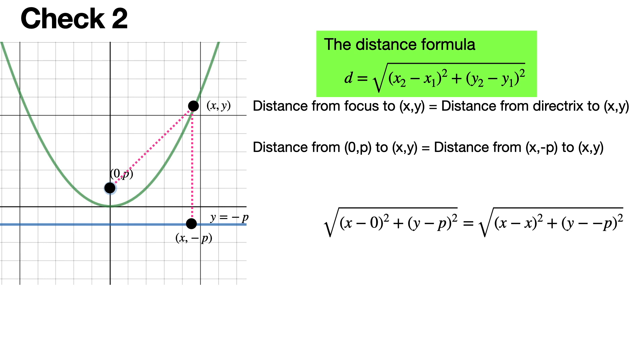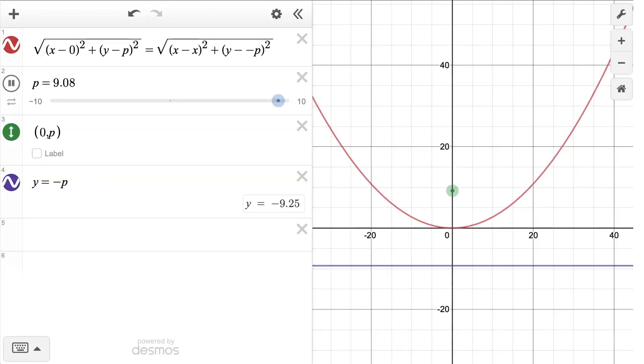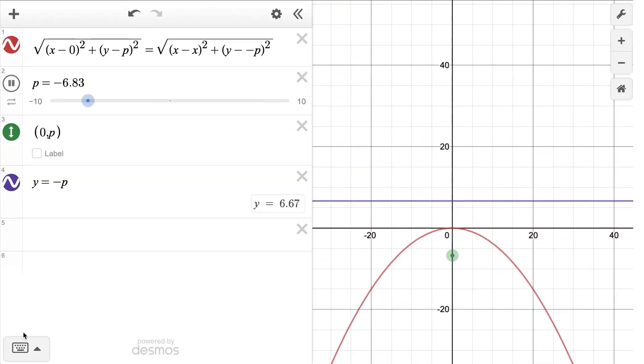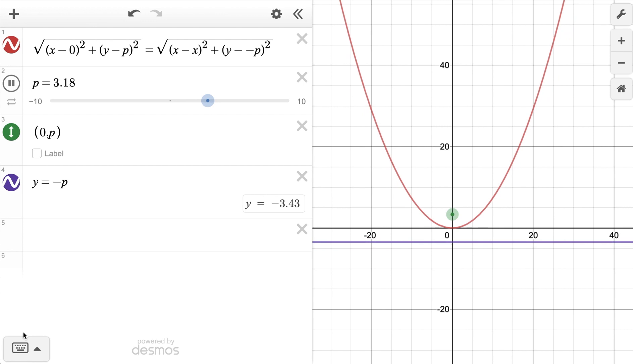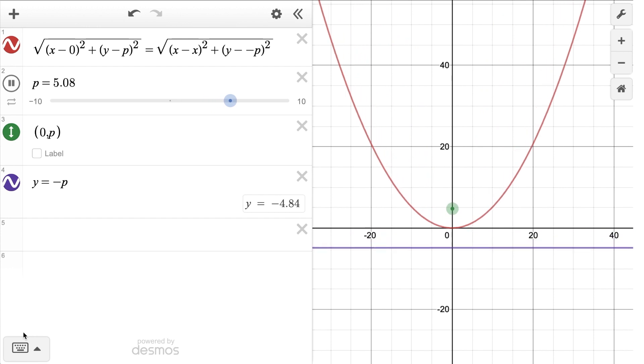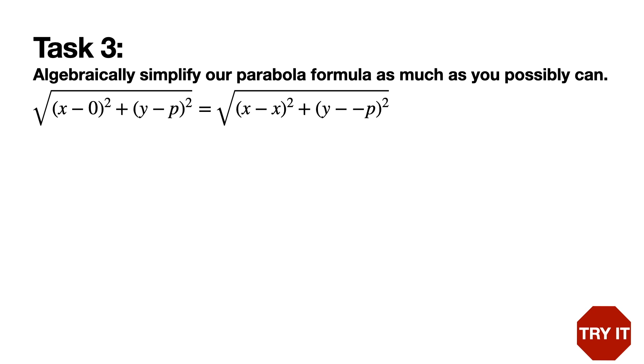Believe it or not, this formula, as unattractive as it is, is actually enough for Desmos to form the parabola. This is not a nice version of the formula. It is unsimplified and rather inelegant, but this is a formula for a parabola. Our last task is to make this into a slightly more elegant formula. Take this formula for a parabola with a vertex at zero zero and distance from focus to vertex p, and simplify it as much as you possibly can.